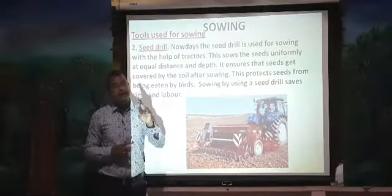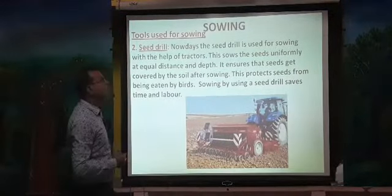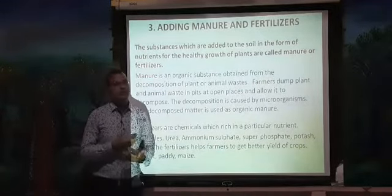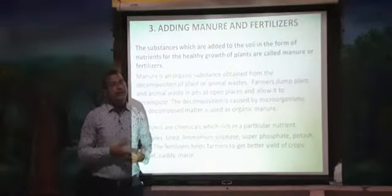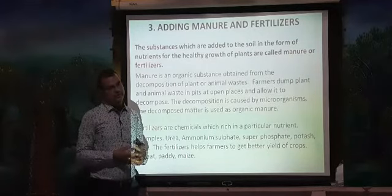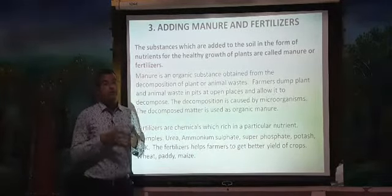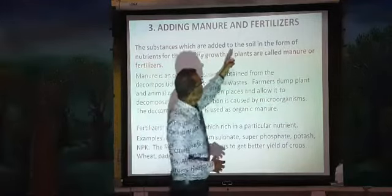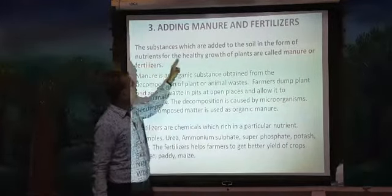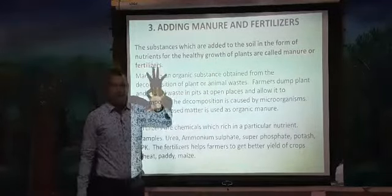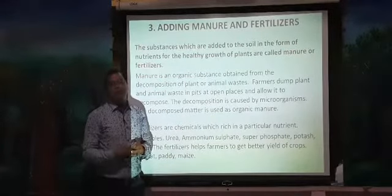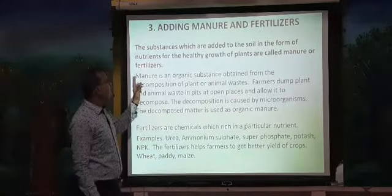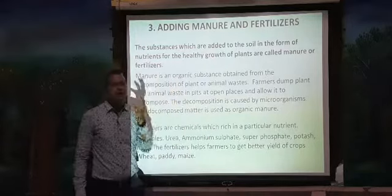This was the second agricultural practice. The third agricultural practice is adding manure and fertilizer. The first practice was preparation of the soil, the second was sowing of seeds, and the third is adding manure and fertilizer. These substances are added to the soil in the form of nutrients for the healthy growth of plants. To get good crops from the field, we need to add manure or fertilizers.